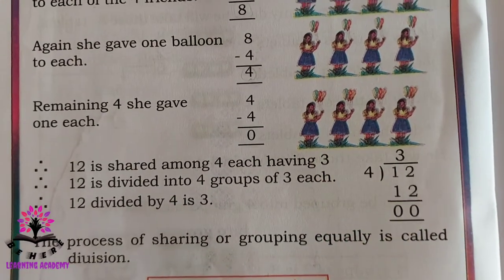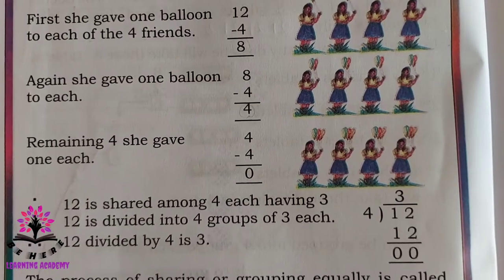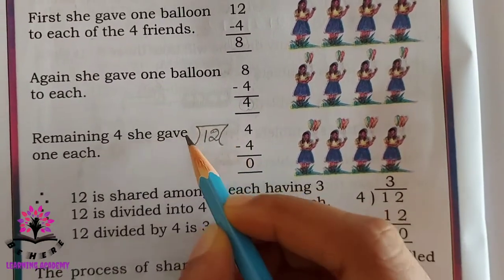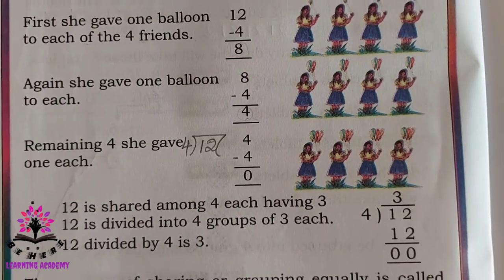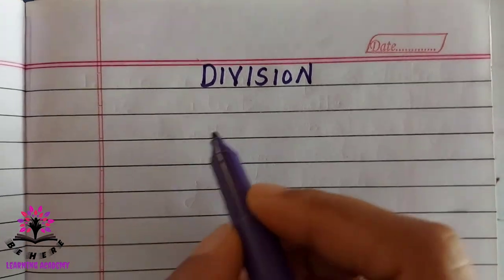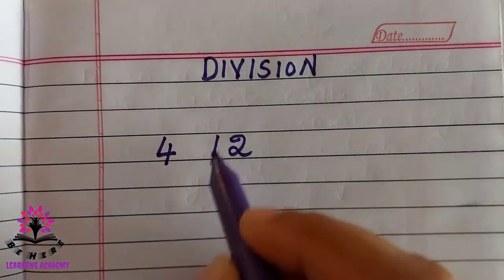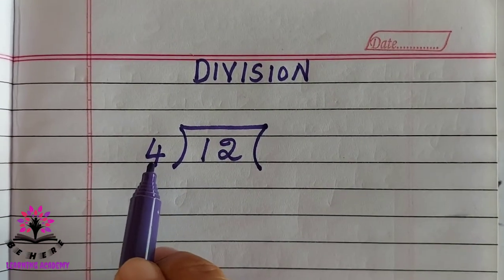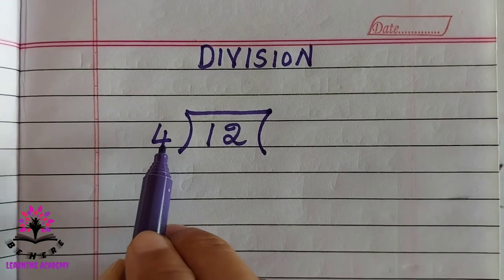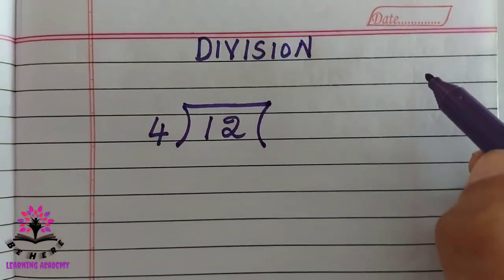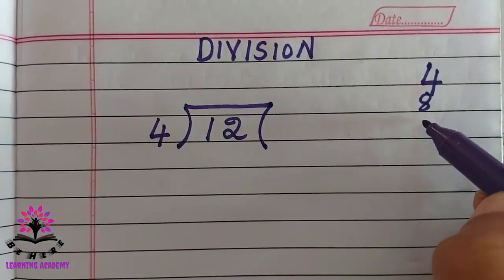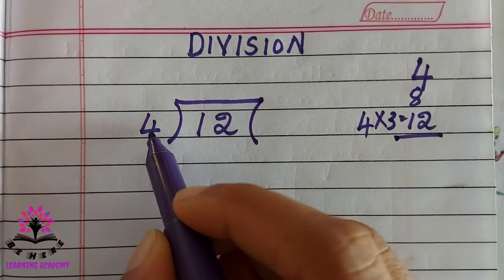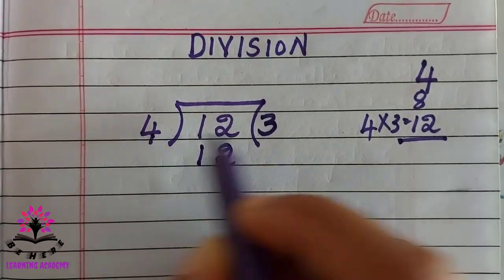We can find this answer using the method of division. The total number of balloons is 12 and total number of friends is four. You know the four times table: four ones are four, four twos are eight, four threes are twelve. So four three is twelve.